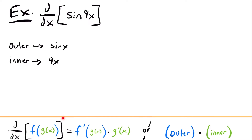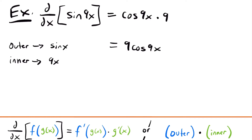Using the chain rule, we take the derivative of the outside function — sine x — which gives cosine x, but we keep the inner function 9x inside it, giving us cosine of 9x. Then we multiply by the derivative of the inside function 9x, which is just 9. So the derivative of sine of 9x is 9 times cosine of 9x.